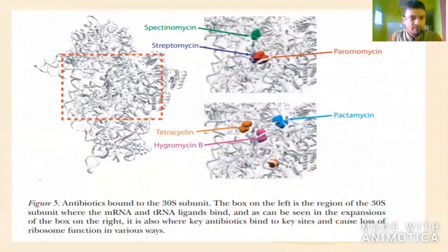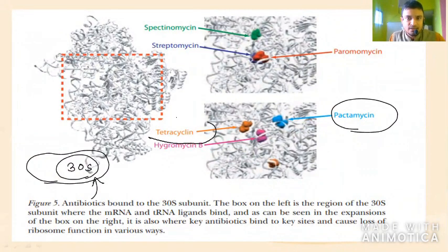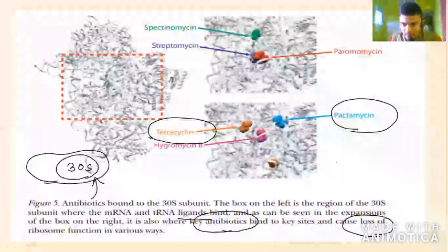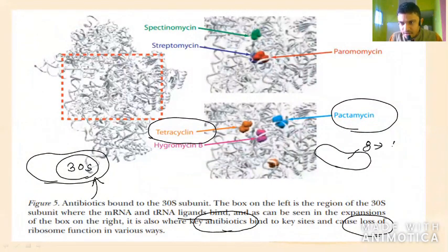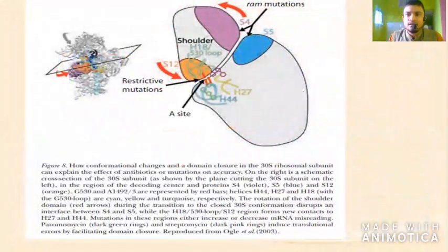From their research: if you have a bacterium with a 30S subunit (prokaryotic), and you apply an antibiotic, different antibiotics interact with different domains of the ribosome — such as spectinomycin and tetracycline. The box on the left region of the 30S subunit shows where messenger RNA and tRNA ligands bind — these are the interaction sites. Key antibiotics bind to these sites and cause loss of ribosome function. Once ribosome function is lost, protein synthesis is instantly blocked, the bacteria cannot survive, and it starts degrading toward death.